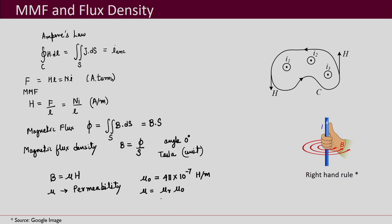Another rule you should remember for this discussion is the right-hand rule. When your fingers are pointing in the direction of the magnetic flux density B, your thumb points in the direction of the current. This you will have to apply.